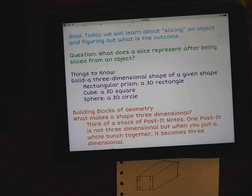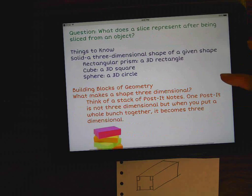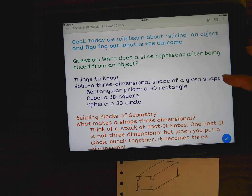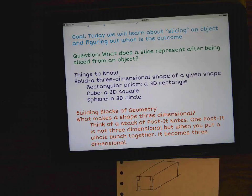The building blocks of geometry. This is really, really helpful and really, really important. I think everything after we do this will make more sense to you. So the building blocks of geometry. What makes a shape three-dimensional? Think of a stack of post-it notes. One post-it is not three-dimensional, but when you put a whole bunch together, it becomes three-dimensional.